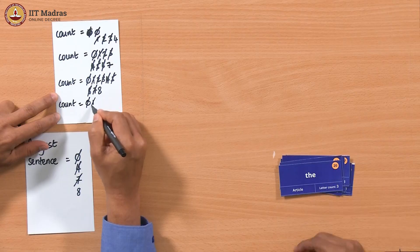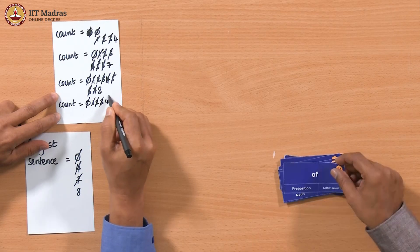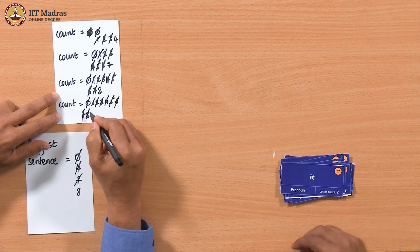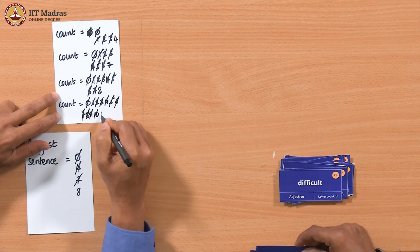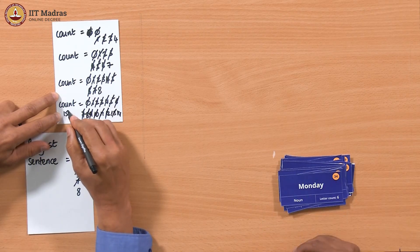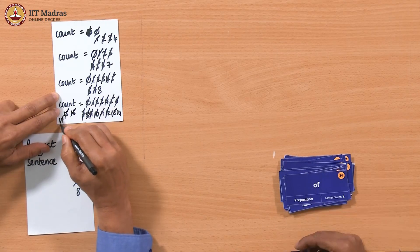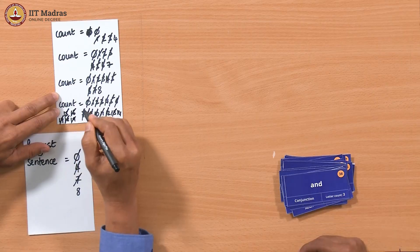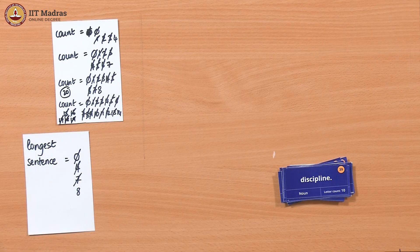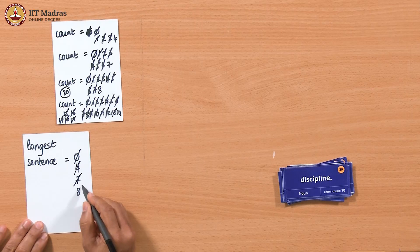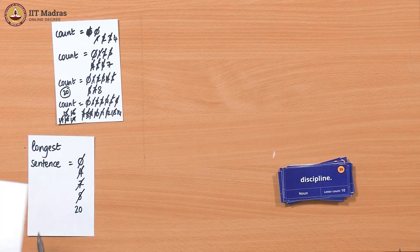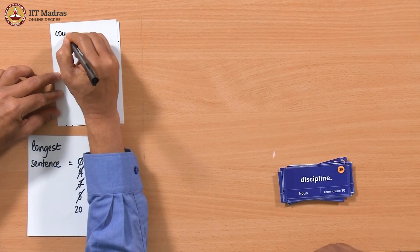We start again: 1, 2, 3, 4, 5, 6, 7 — this is a comma, not a full stop — 8, 9, 10, 11, 12, 13, 14, 15, 16, 17, 18, 19, 20 — running out of space. So it was 20. This is of course much bigger than 8, which was our earlier longest sentence. So now we say that our longest sentence has 20 words. We set count to 0 for the next sentence.